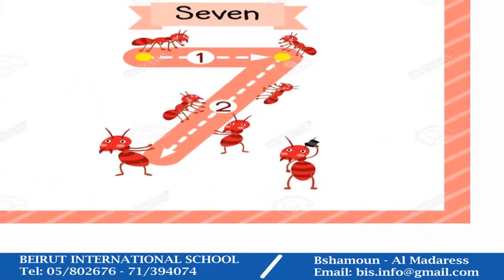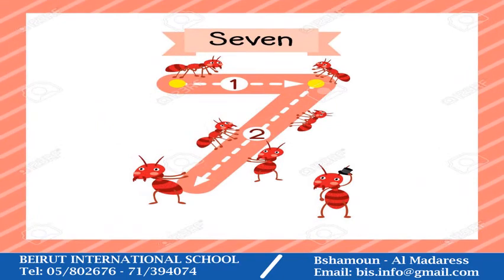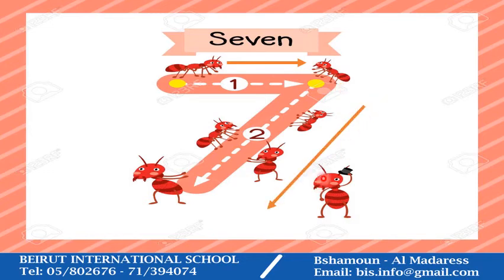Okay kids, let's learn how to trace number seven. Let's follow the arrows. First, we start from the top with a straight line, then we go downward with a slanted line. Again: first we start from the top with a straight line, then we go downward with a slanted line.